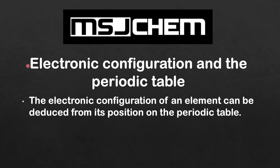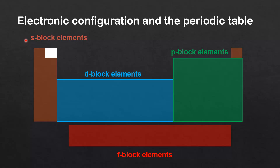This is MSJChem and in this video I am going to look at electronic configuration and the periodic table. The electronic configuration of an element can be deduced from its position on the periodic table. The periodic table can be divided into S block elements, D block elements, P block elements, and F block elements. The letter of each block refers to the subshell which contains the elements' valence electrons.